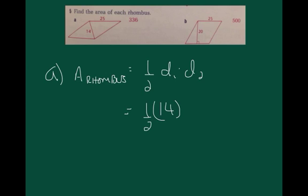Since I know that one of the diagonals is 14, I can find the other diagonal by recognizing that when the 14 is bisected, I get a right triangle that has 7 as one leg, 25 as the hypotenuse, so the other leg must be 24, which makes the entire diagonal 48. So, when I multiply these two out, I get 336.